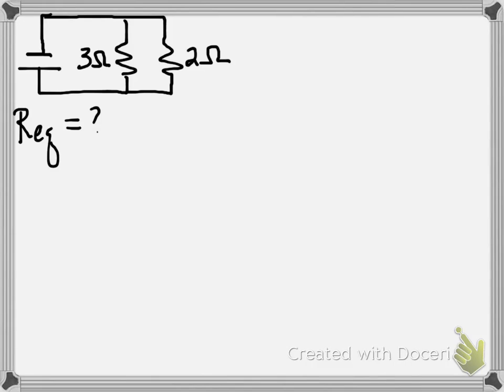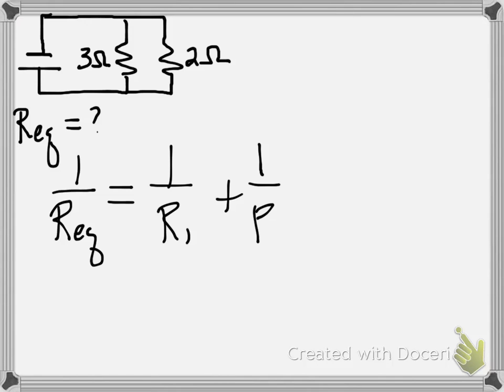All right, so now we're going to figure out the equivalent resistance for the same two resistors, the 3 ohm and the 2 ohm resistor, but now instead of wiring them in series, we've wired them in parallel. So we can't solve directly for equivalent resistance. We can only solve for the reciprocal of equivalent resistance, and then we'll take the reciprocal of our answer. And we know that it's 1 over R1 plus 1 over R2.